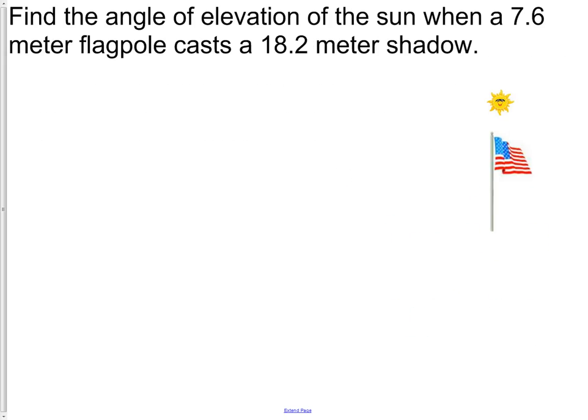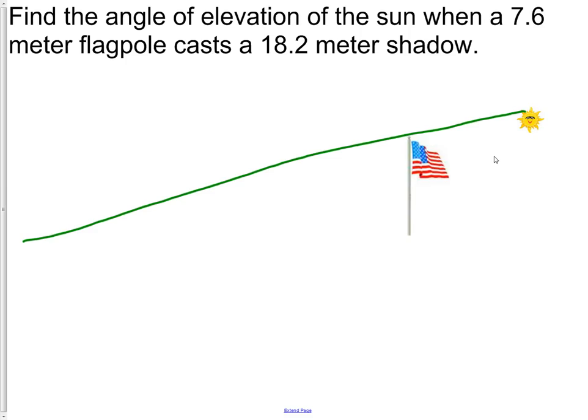Let's try another one. Find the angle of elevation of the sun when a 7.6 meter flagpole casts an 18.2 meter shadow. So here's our flagpole. Now the sun's shining down, and we need to make an 18.2 meter shadow. So there's the sun ray that's casting a shadow of the flagpole. The flagpole is along the ground, so we know we have an 18.2 meter shadow of a 7.6 meter flagpole. So we want to find the angle of elevation. So we're right here on the ground, and we're trying to measure that angle.